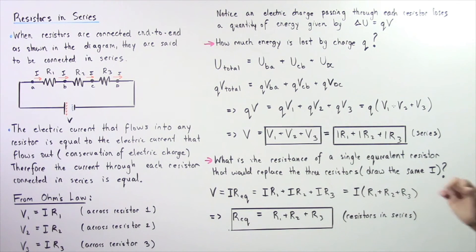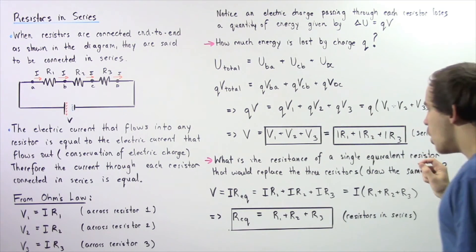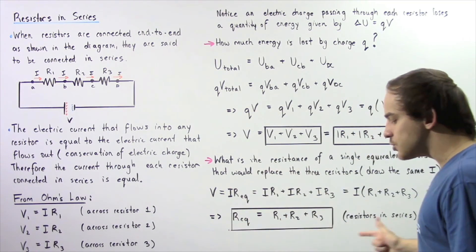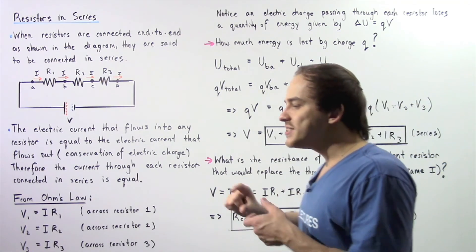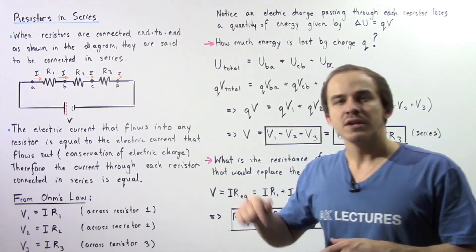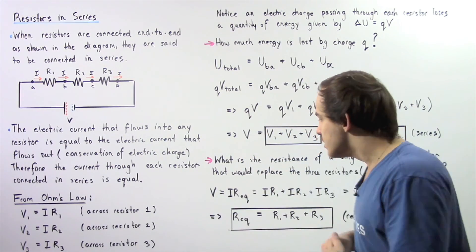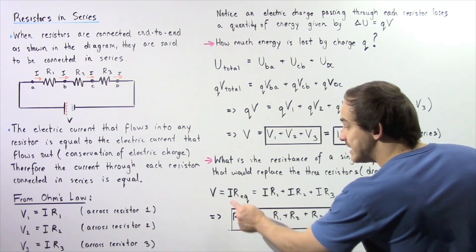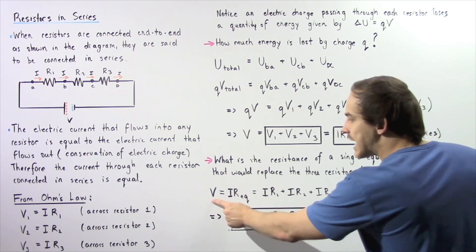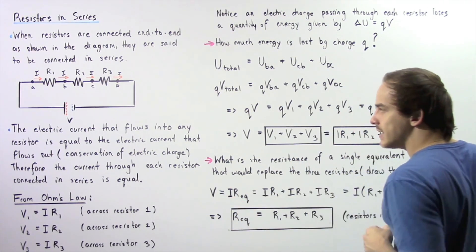This result tells us that the more resistors we have in series with respect to one another, the greater our equivalent resistance REQ becomes. For the same exact voltage difference, a greater REQ means a smaller electric current I.